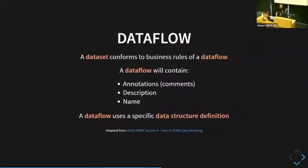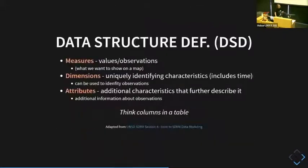I'm going to quickly go through all of the different components relevant to me and most likely relevant to you for SDMX. Data flow: a data set conforms to business rules of a data flow. A data flow will contain annotations, description, and name, and it will use a specific data structure definition. A data structure definition is built up of measures, dimensions, and attributes. Measures are just values you're actually interested in — observations. Dimensions are uniquely identifying characteristics of data, such as time. Attributes give you additional information about the data.